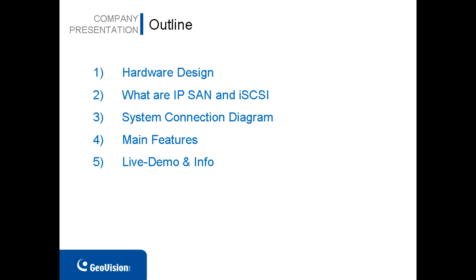Before we get into the main point, let's take a quick look at the outline here. In this product introduction video, I will go through the hardware design of GeoVision Storage System v2, explain what IP SAN and iSCSI are, which are the protocols used for connecting between hosts and the storage, the system connection diagram, main features, and see what benefits you can receive by adopting Storage v2. And after we're done with the main features, we've got a couple of clips for system setup and hardware design.